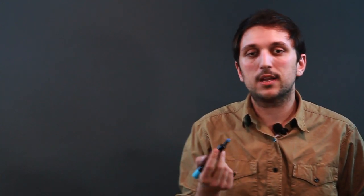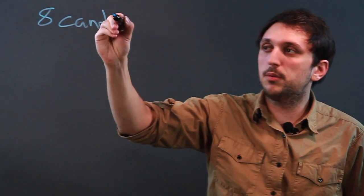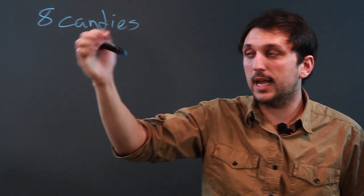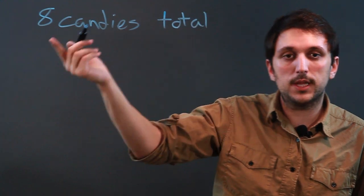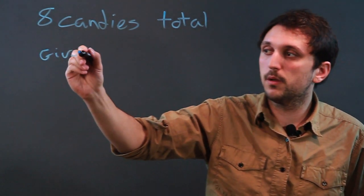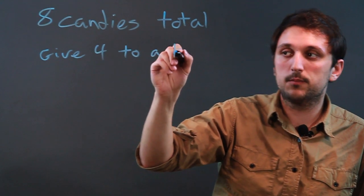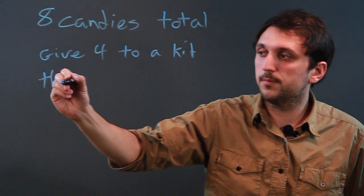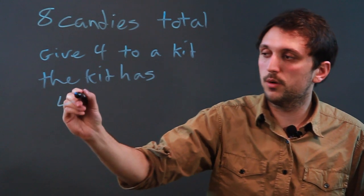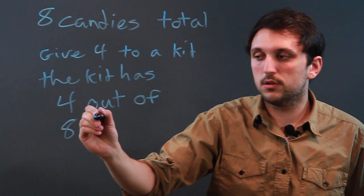So let's say we have eight candies, and you can put them out in front on a plate. There's eight candies total. That's how many are on the plate. If you give four to a kid, the kid has four out of eight total.